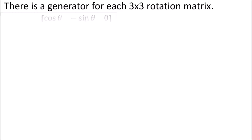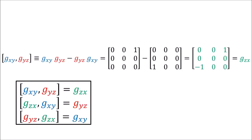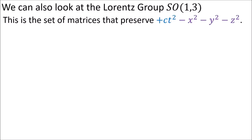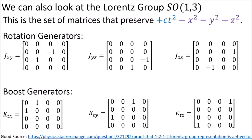I show that we can get generators for all the 3x3 rotation matrices. I also show that the generators obey special commutation relations which is why they form a Lie algebra. The Lie group of Lorentz transformations is SO(1,3) and it has six main matrices each with their own generator.